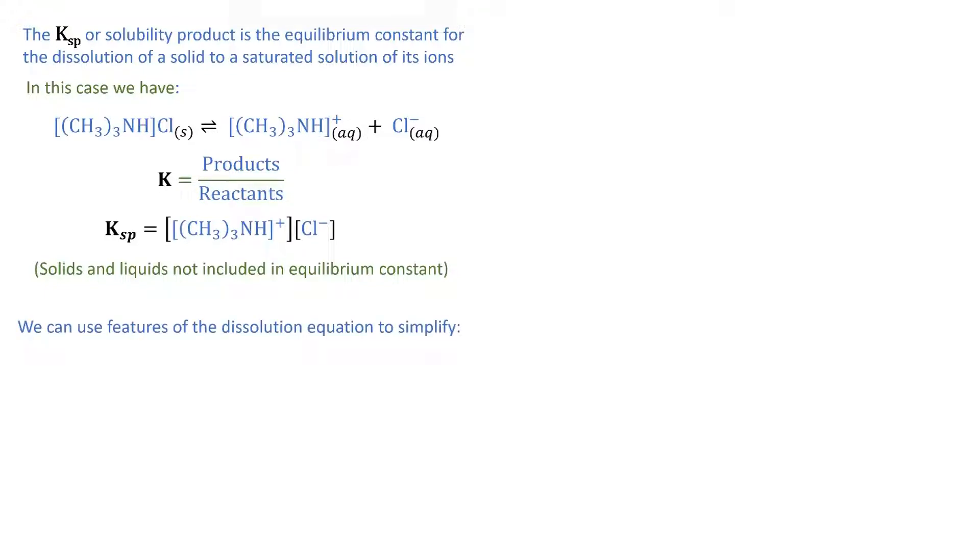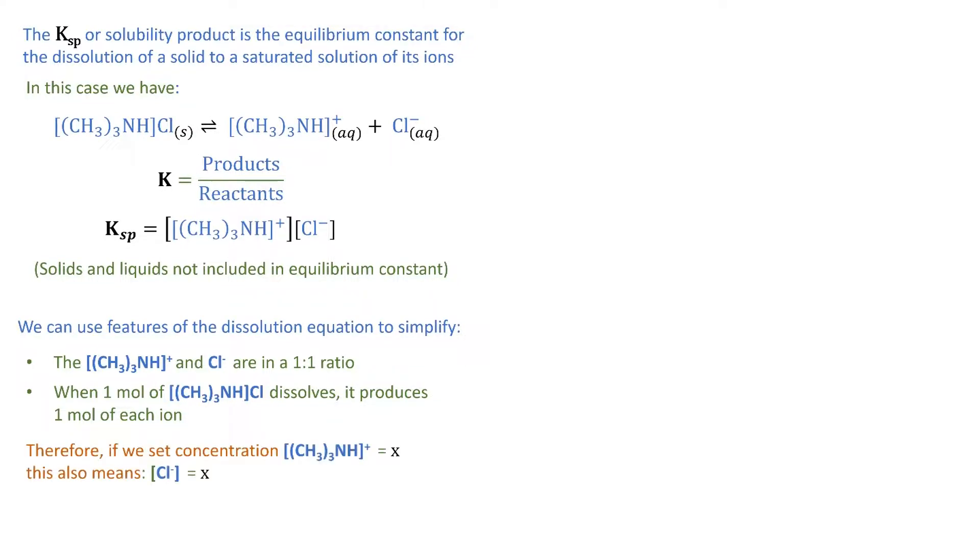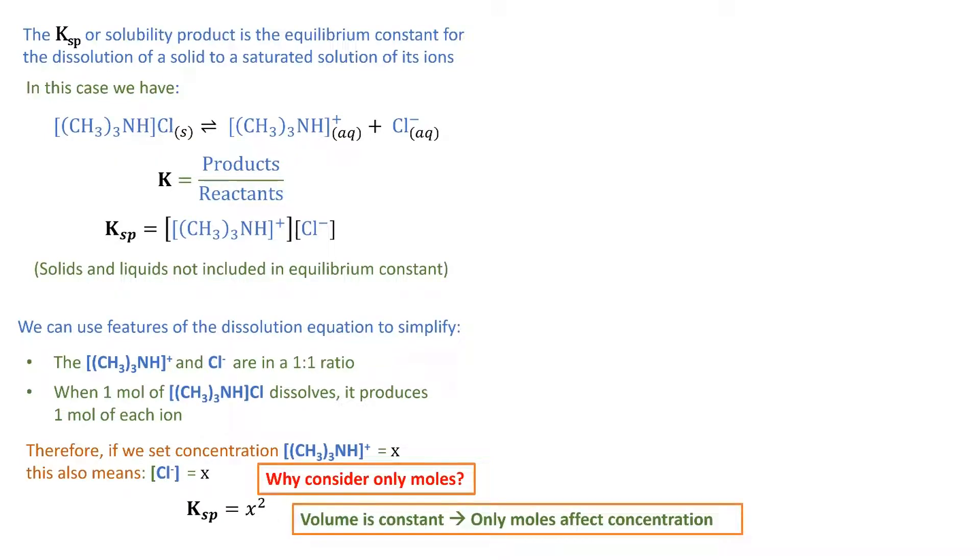Just as we did on the previous slide, we can use features of the dissolution equation to simplify the expression and make it solvable. Firstly, we note that the trimethylammonium ion and chloride ion are in a one-to-one ratio. This means that when one mole of trimethylammonium chloride dissolves, it produces one mole of each ion. If we set the concentration of the trimethylammonium ion as X, this means that the chloride ion concentration is also X. Therefore, the solubility product is just X squared. But we set the concentration to X. Why do we consider only moles? This is because the volume is constant, and only the number of moles will affect the concentration.